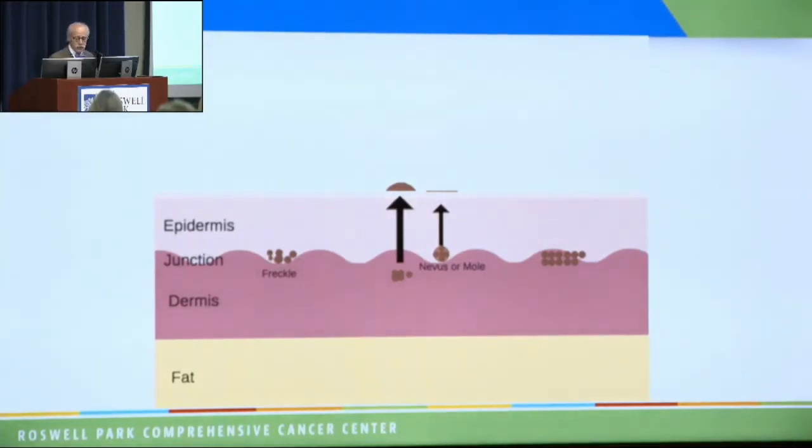If they're in both locations, it's called a compound nevus, and those can be identified by looking at your skin. A junctional nevus is flat, and a compound nevus will have both a flat part and a bump on it.